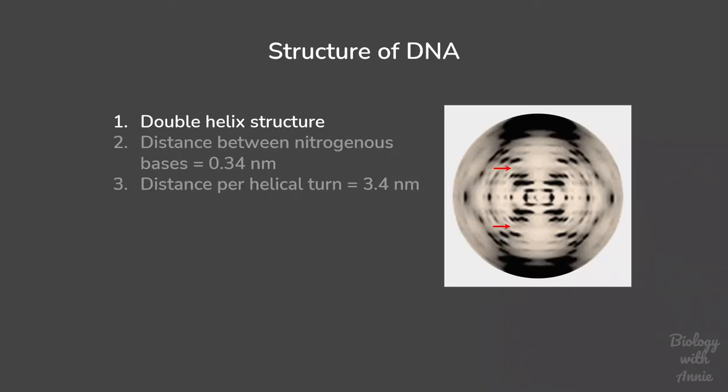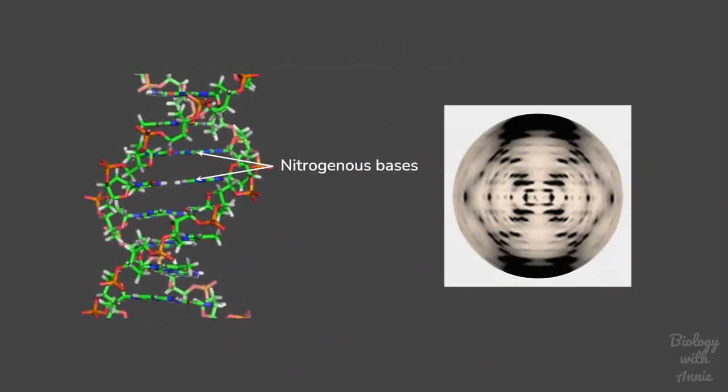The second feature inferred from the image is the distance between the stacked nitrogenous bases. The distance from the center of the image to the broad mark on top depends on the spacing between the nitrogenous bases. This value was calculated to be 0.34 nanometers.